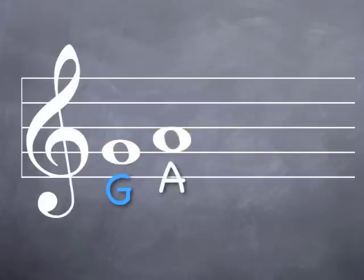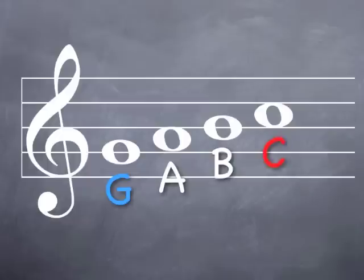Then we have to start over again with A. If we step up from this space to the very next line, we've stepped up from A to B. And if we step up one more time from this line to the very next space, we will have arrived at our next guide note, treble C.